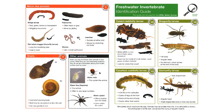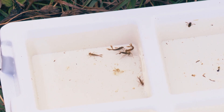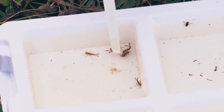The Opal Water Survey includes a guide to most of the invertebrates you might find and what they tell you about the water quality. Animals that score one are the most tolerant whereas animals that score ten are the most sensitive. Here are some of the invertebrates we found in the pond.